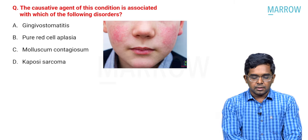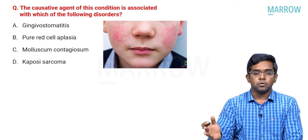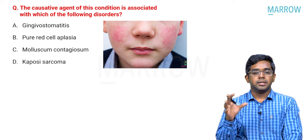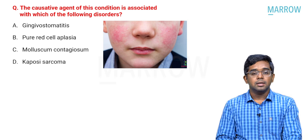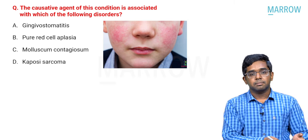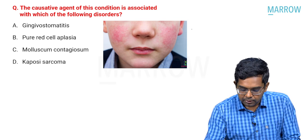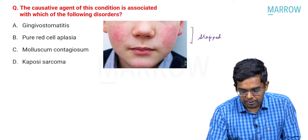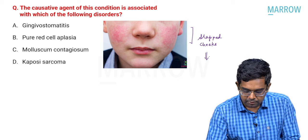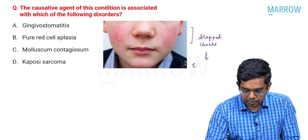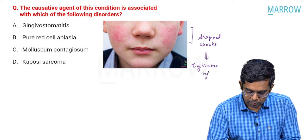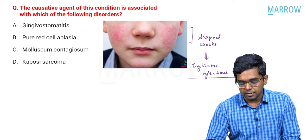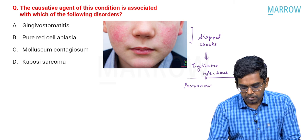Moving on to question 3: the causative agent of this condition is associated with which of the following disorders — gingivostomatitis, pure red cell aplasia, molluscum contagiosum, or Kaposi sarcoma? First, identify the condition. The characteristic appearance shows intense redness of the cheeks — the slapped cheek appearance. It is erythema infectiosum, caused by parvovirus B19 infection.